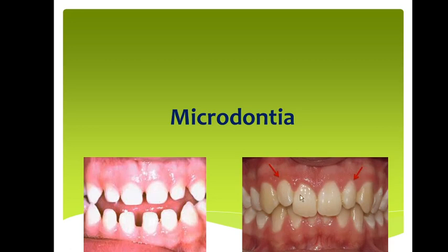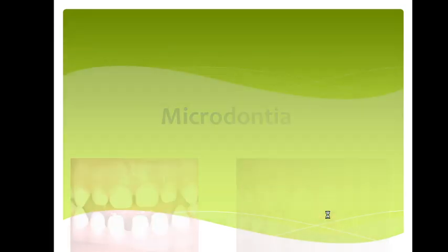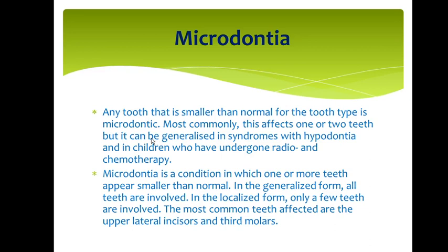This is localized microdontia because certain teeth are small. Microdontia is when any tooth is smaller than normal. It typically affects one or two teeth, but it can be generalized in syndromes with hypodontia where all teeth are involved. Children who have undergone radiotherapy or chemotherapy may also have microdontia.